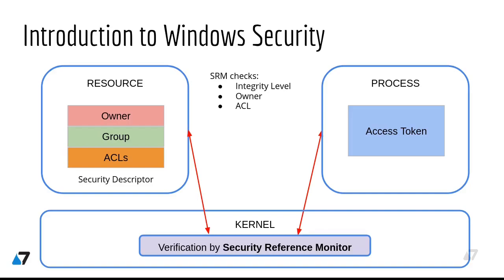How is access to resources granted or denied? Each resource has a security descriptor composed of an owner, group, and some access lists which describe who can and who cannot access the resource. On the other hand, processes use access tokens, which are dedicated objects describing the user's identity. The security reference monitor in the kernel checks if a call from a specific process to access a specific resource is allowed or not.